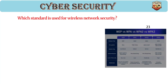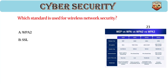Which standard is used for wireless network security? Answer: A, WPA2. WPA2 uses AES encryption for Wi-Fi security, replaces the older WEP standard, and WPA3 is the latest version.